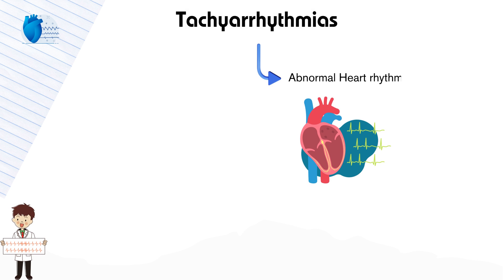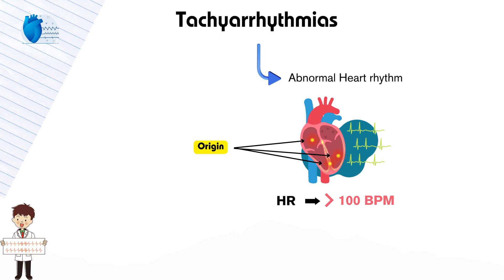Tachyarrhythmias are abnormal heart rhythms characterized by a heart rate greater than 100 beats per minute in adults. They can originate in various parts of the heart, including the atria, ventricles, or conduction pathways. We'll take a closer look at all the tachyarrhythmias.